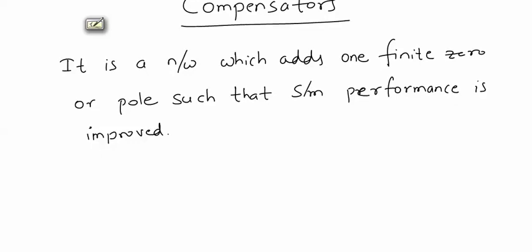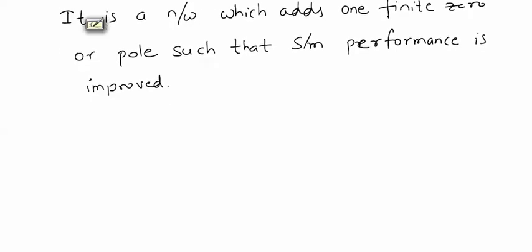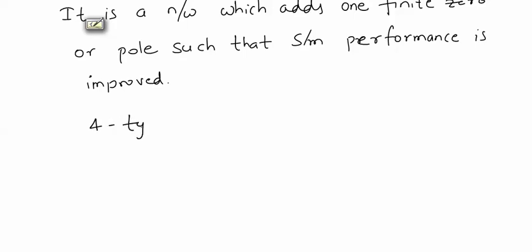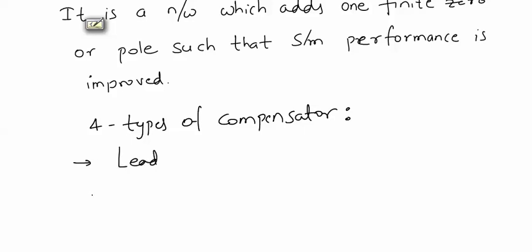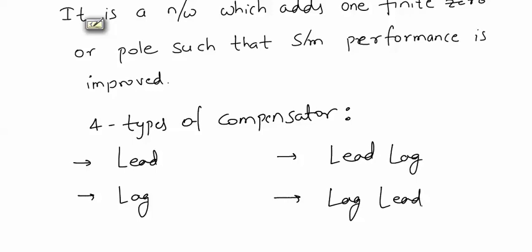There are four types of compensators: lead compensator, lag compensator, lead-lag compensator, and lag-lead compensator. In each of them we add a finite pole or a finite zero.